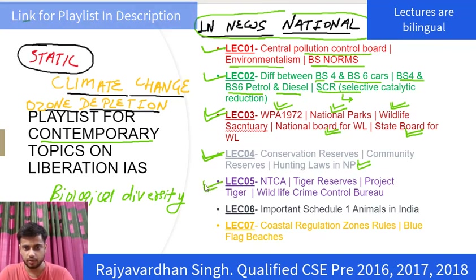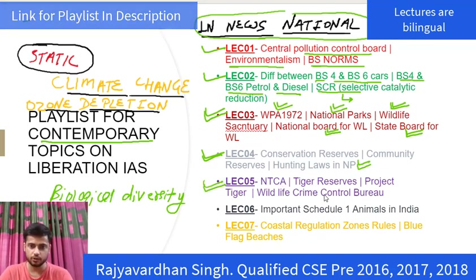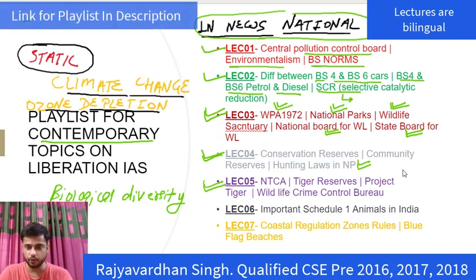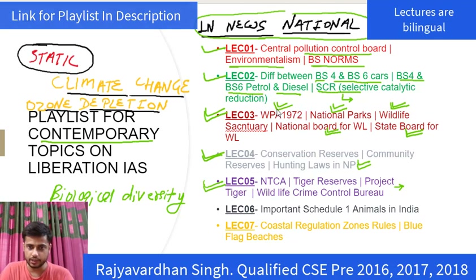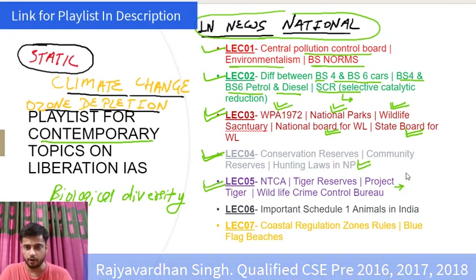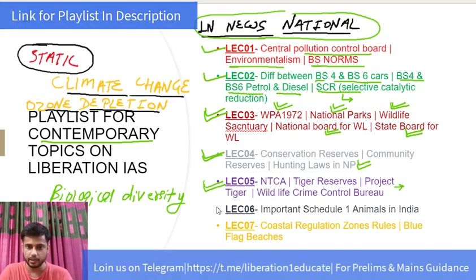In lecture 5, we discussed the National Tiger Conservation Authority, Tiger Reserves, Project Tiger, the Wildlife Crime Control Bureau, and the power of the Central Government to amend the schedules of the Wildlife Protection Act 1972, as well as the power to declare permits.